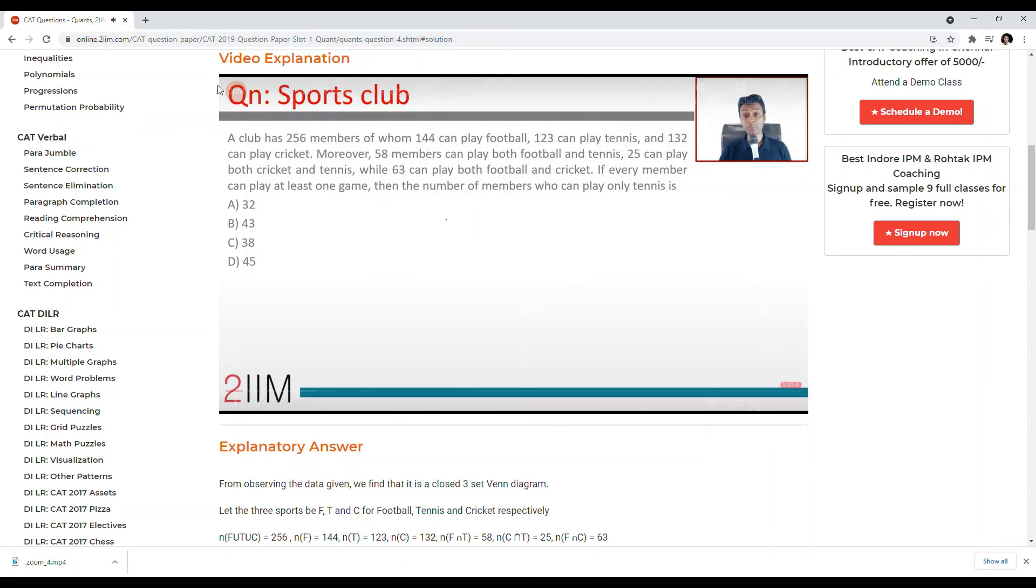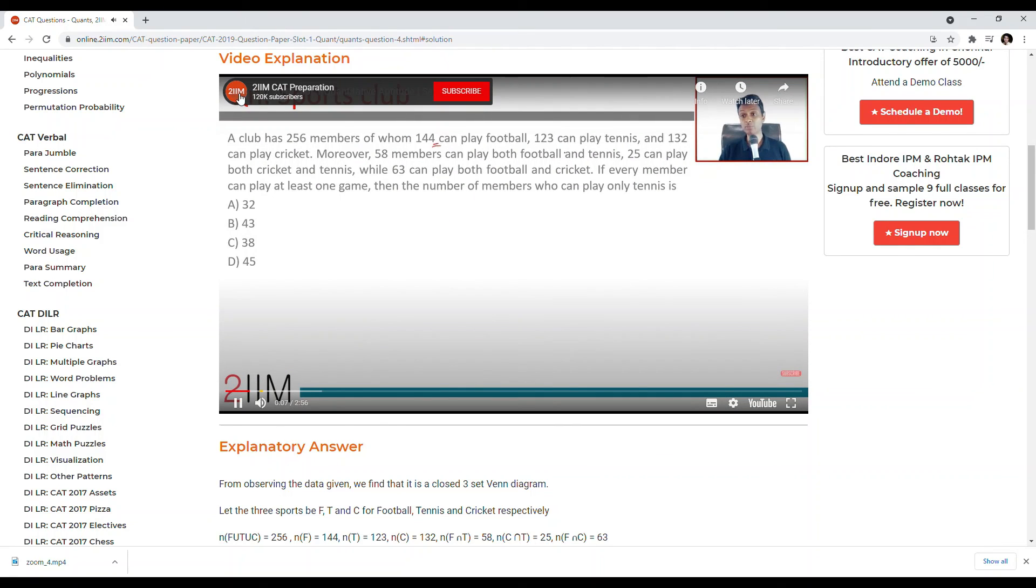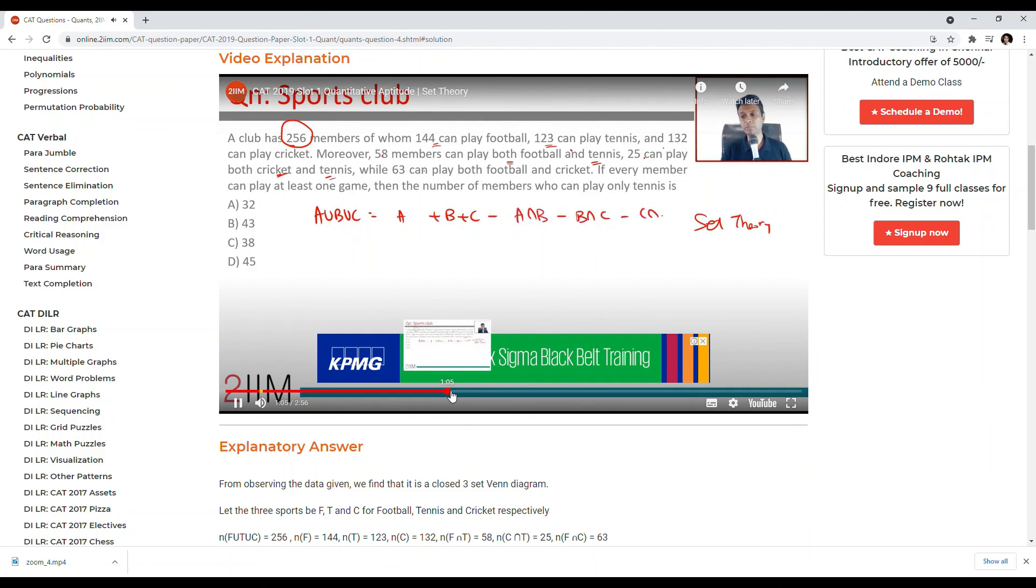A club has 256 members of whom 144 can play football, 123 can play tennis and intersection B, minus B, intersection C, minus 6 of these and this I will find.